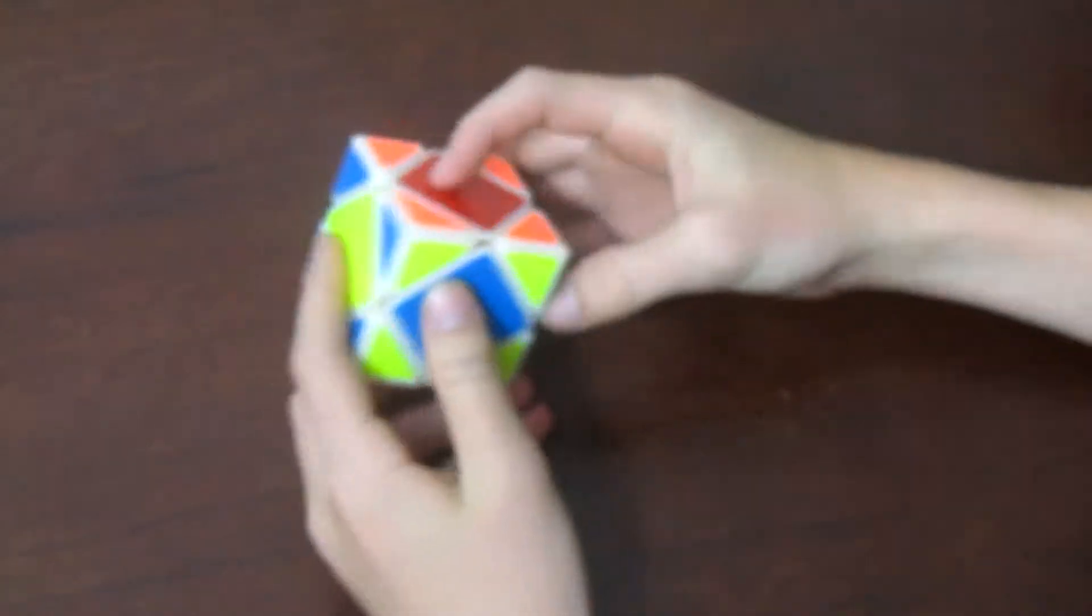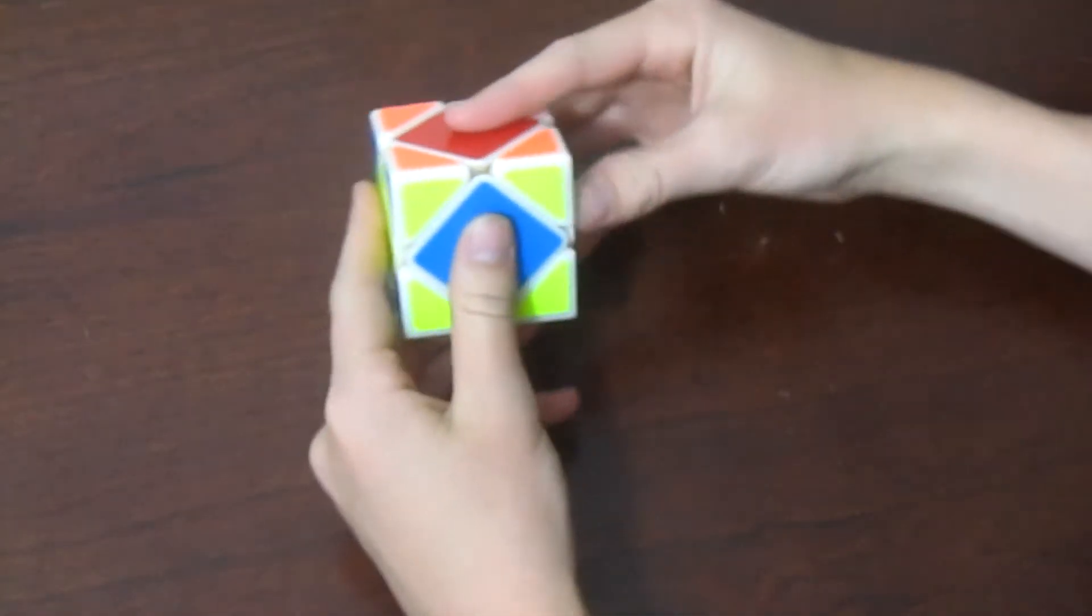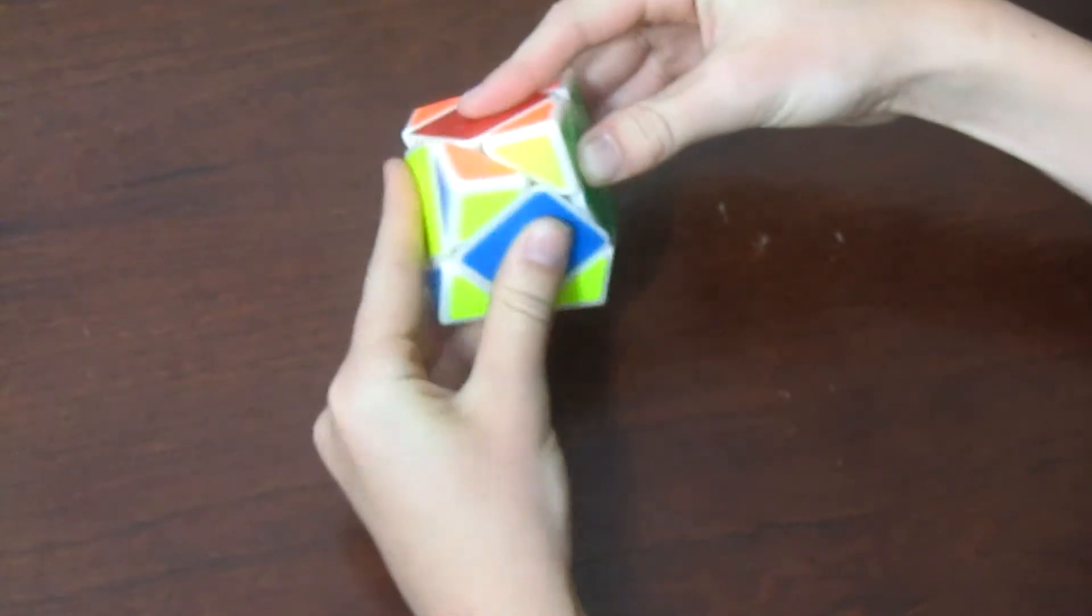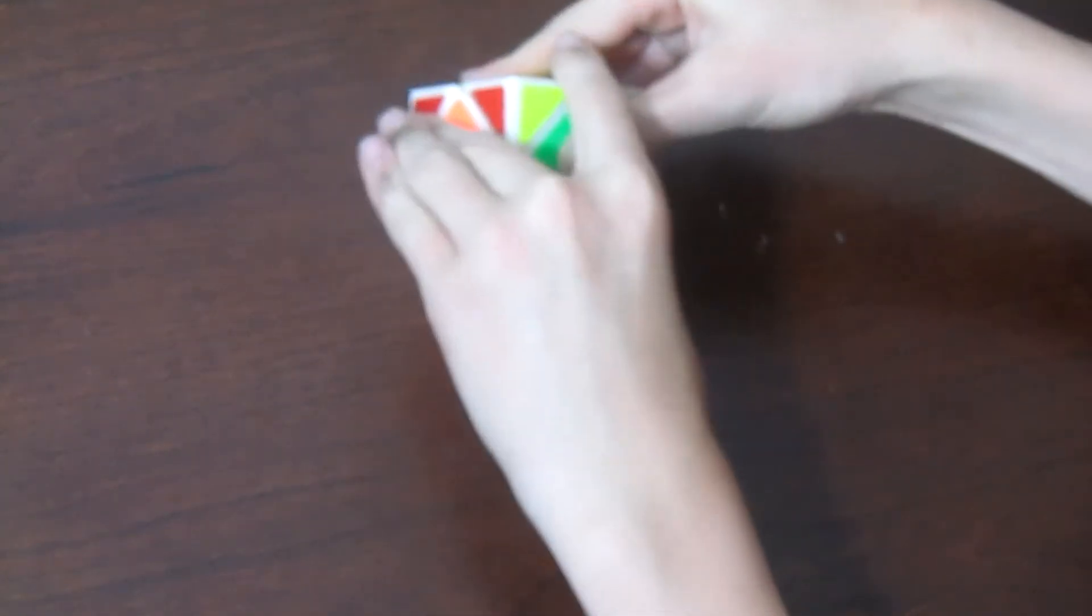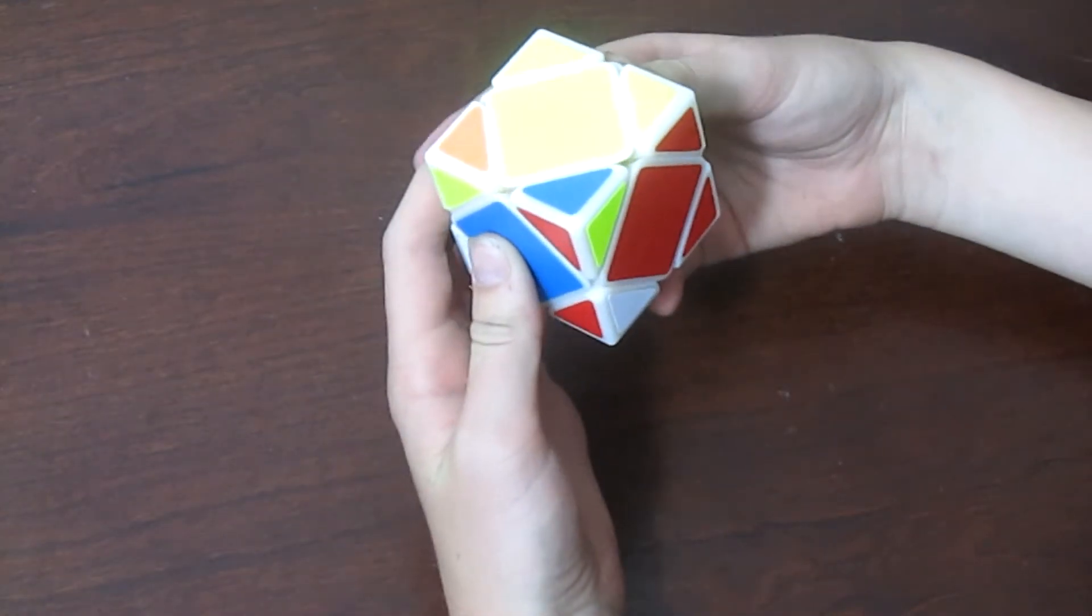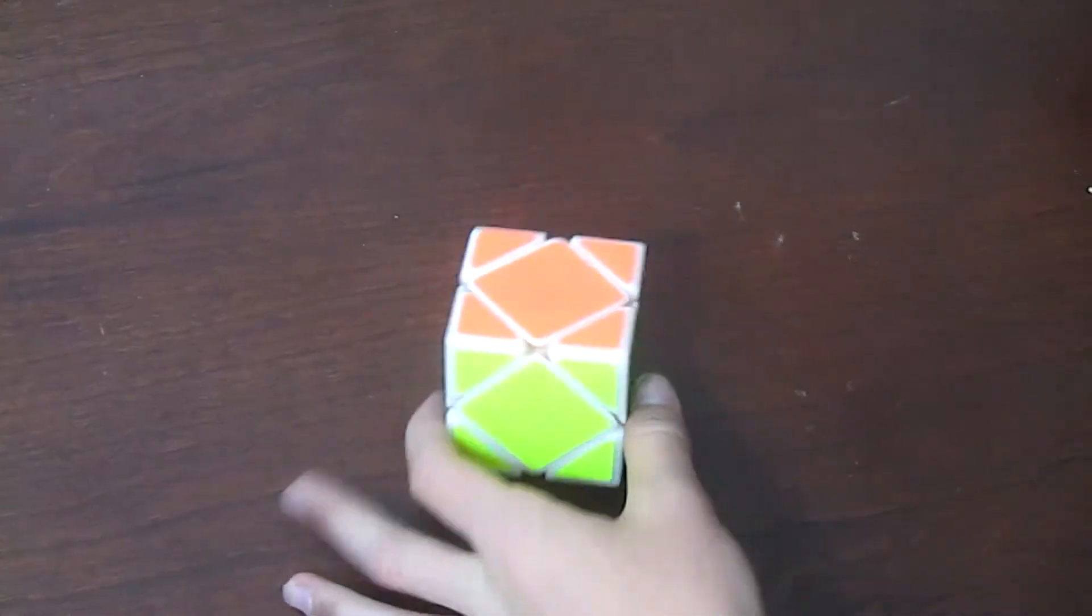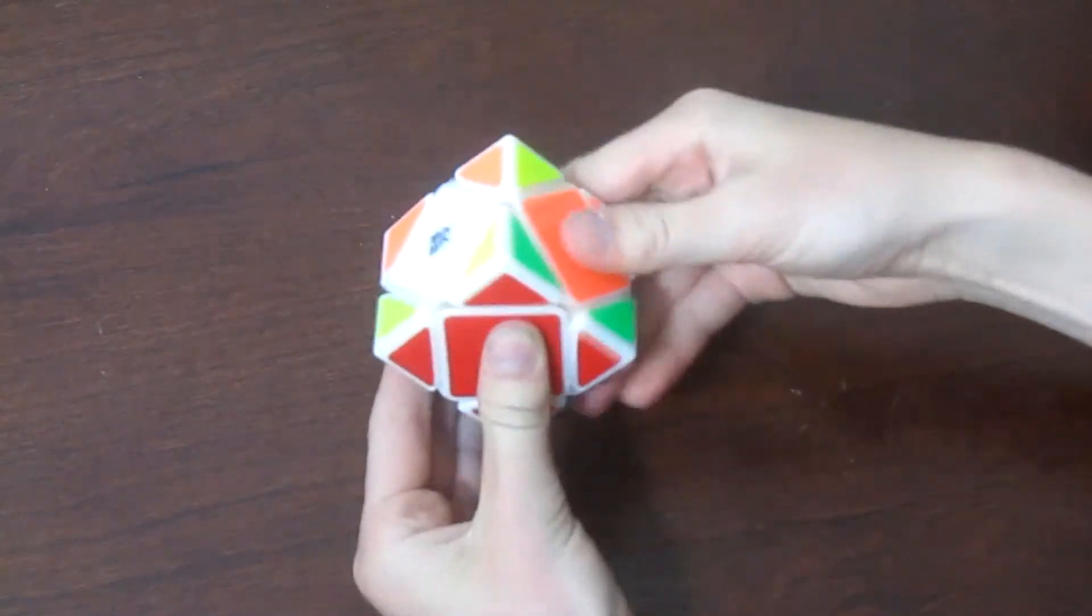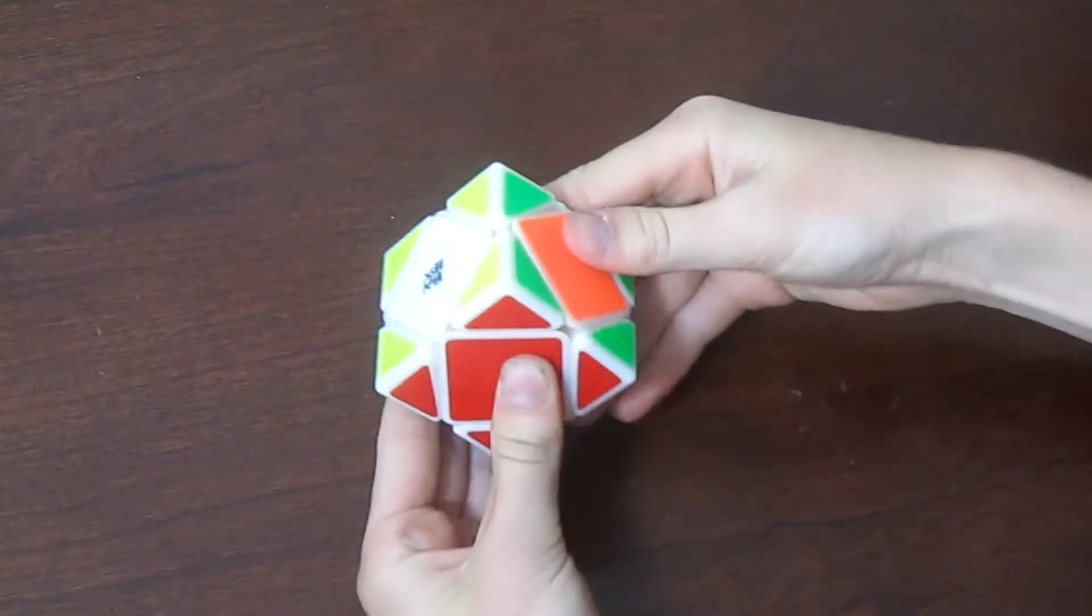So that's pretty much it. I'll walk it through one more time. Thumb on the front, point of finger on the left, middle finger on the bottom. Pull down, and look how I'm pushing up with my middle finger and pointer finger. Then I already have my thumb ready to pull up, and push back down with my thumb and middle finger. That's pretty much it.